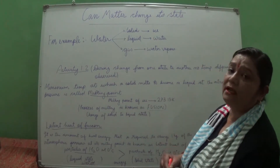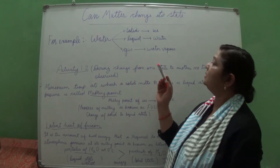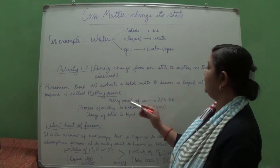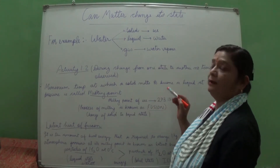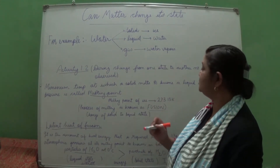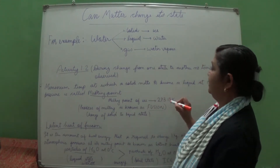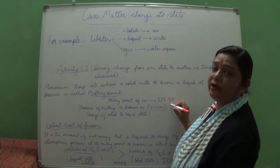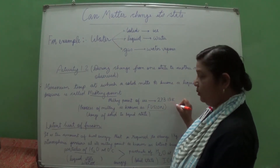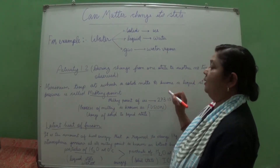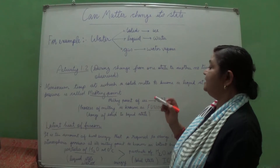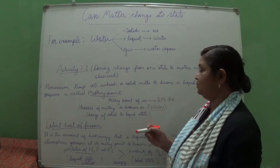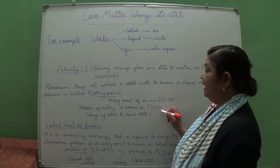When talking about water, the melting point of ice is 273.15 Kelvin. This process of melting is known as fusion — the change of the solid state into the liquid state.